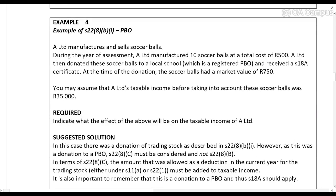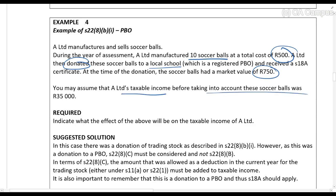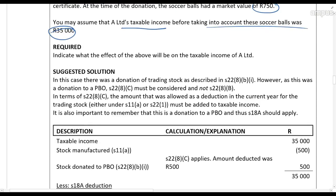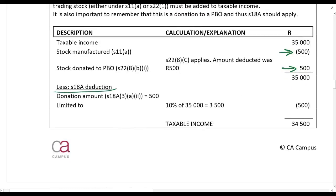Example four: A Limited manufactures and sells soccer balls. During the current year of assessment A Limited manufactured ten soccer balls at a total cost of five hundred rands. A Limited then donated these soccer balls to a local school which is a registered PBO and received a Section 18 certificate. At the time of donation the soccer balls had a market value of seven hundred and fifty rands. You may assume taxable income before these soccer balls was thirty-five thousand rands. First you would have had a deduction for the five hundred rands cost. Then donating to a PBO means whatever you claimed as a deduction must be the amount recouped — so five hundred rands is recouped. Because this is a donation to a PBO you also get your donations deduction, which is why they gave us the rest of that information.